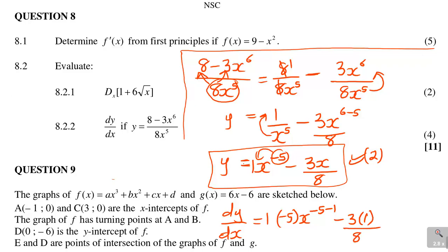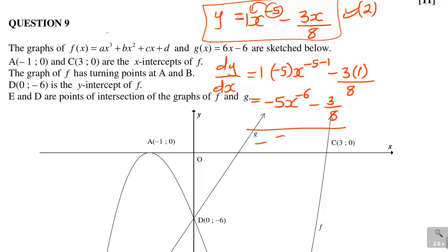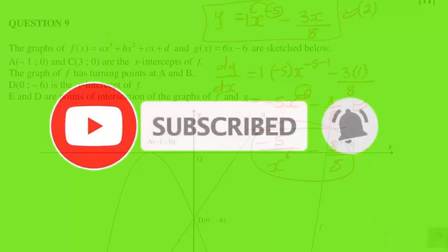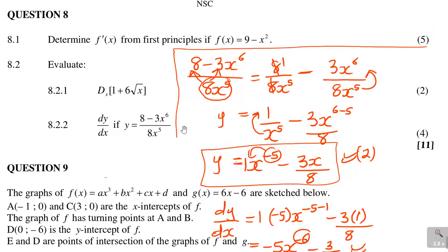Simplifying: 1 times minus 5 is minus 5, so dy/dx equals minus 5x to the power negative 6 minus 3 over 8. If you prefer positive exponents, that is minus 5 over x to the power 6 minus 3 over 8. If you're not sure how to convert, just leave your answer with the negative exponent — you're done. That is how you perform rules of differentiation as well as differentiation from first principles.